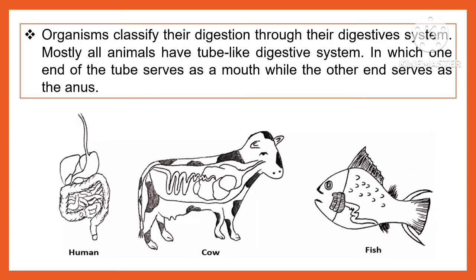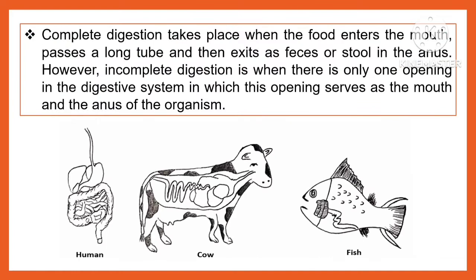Organisms classify their digestion through their digestive system. Mostly all animals have a tube-like digestive system in which one end of the tube serves as a mouth while the other end serves as the anus. Complete digestion takes place when the food enters the mouth, passes a long tube, and then exits as feces or stool in the anus. However, incomplete digestion is when there is only one opening in the digestive system, in which this opening serves as both the mouth and the anus of the organism.